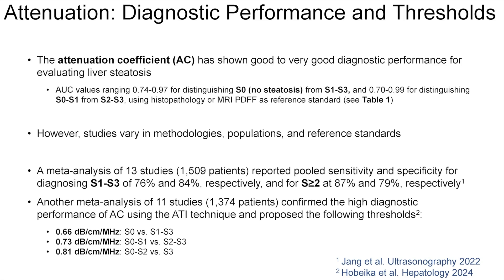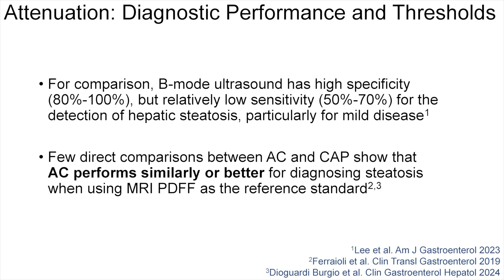The attenuation coefficient has shown good to very good diagnostic performance for grading of liver steatosis. However, studies vary in methodologies, populations, and reference standards. A meta-analysis of 13 studies has reported a pooled sensitivity and specificity for diagnosing S1 to S3 of 76% and 84% respectively, and for S2 or higher of 87% and 79% respectively. For comparison, B-mode ultrasound has high specificity but relatively low sensitivity for the detection of hepatic steatosis, especially for mild disease. Few direct comparisons between attenuation coefficient and controlled attenuation parameter have shown that attenuation coefficient performs similarly or better for grading steatosis when using MRI-PDFF as the reference standard.